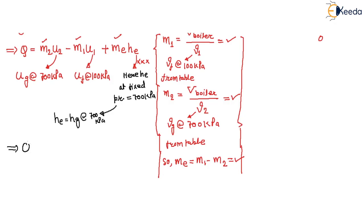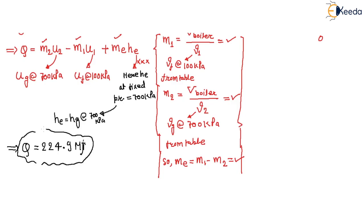The value of heat transfer comes out to approximately 2 to 4.9 megajoules. This is positive, meaning heat is added to the system.